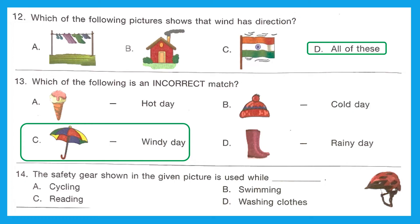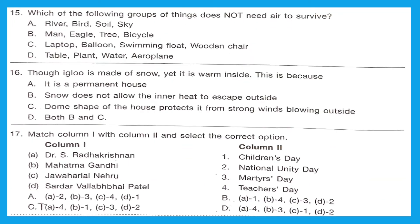Question 14: The safety gear shown in the given picture is used while doing what? The gear shown is a helmet. The options are cycling, swimming, reading, or washing clothes. The right answer is while riding a bicycle — option A.